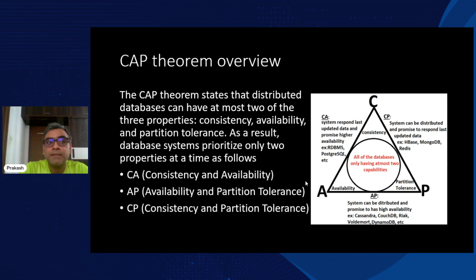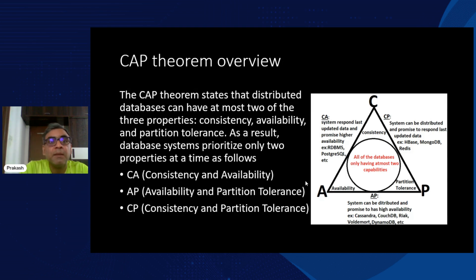Out of CAP, you can have up to two — you can't have all three. For example, if there is a network connection failure, partition tolerance is gone, and you can't have both availability and consistency. If the system is available, it can't be consistent, and if it's consistent, it can't be available during a network failure. So you can choose either: consistency + availability, availability + partition tolerance, or consistency + partition tolerance.